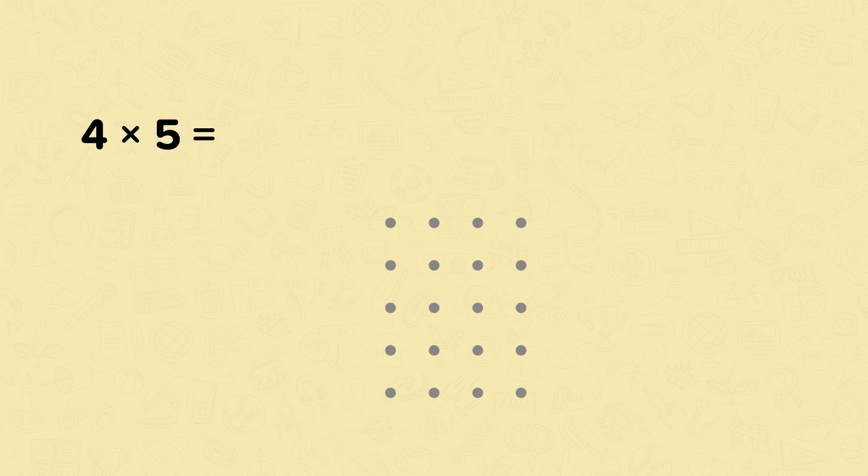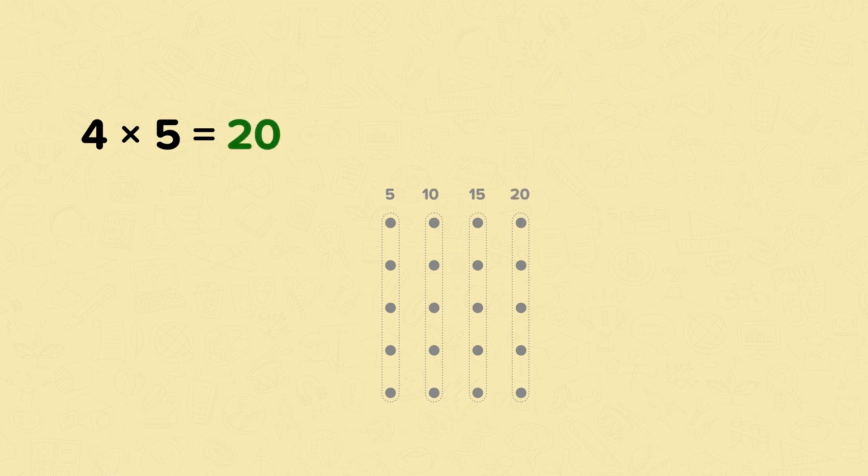Remember, you could count each dot on its own, but if you can count in 5s, you can count in groups of 5 at a time. Here we have 5, 10, 15, 20. So, 4 times 5 equals 20.